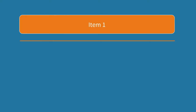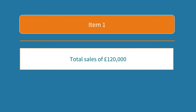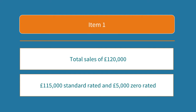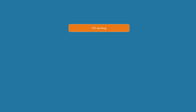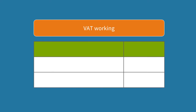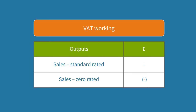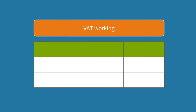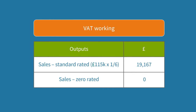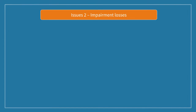Let's look at item one. Total sales are £120,000 so we will use this to calculate our output VAT. However only £115,000 of these are standard rated sales whereas the remaining £5,000 are zero rated. We add both into our pro forma. The zero rated sales get a zero for half a mark. For the standard rated sales, the VAT-inclusive amount is £115,000, so we take one sixth of this to get the VAT of £19,167.